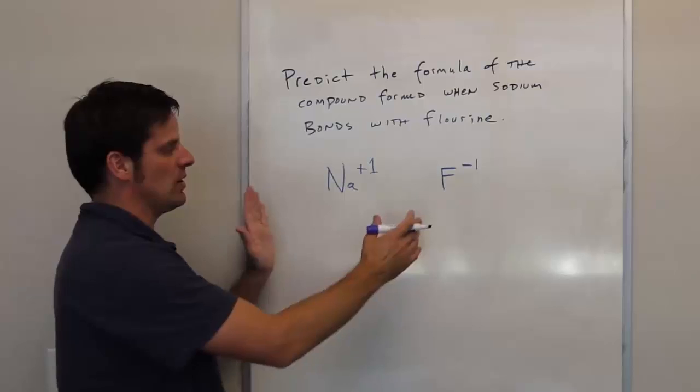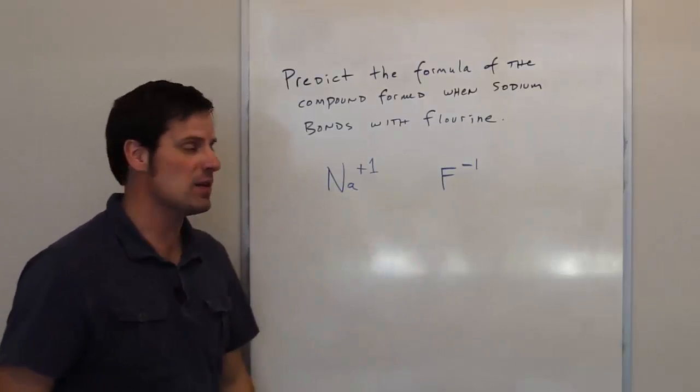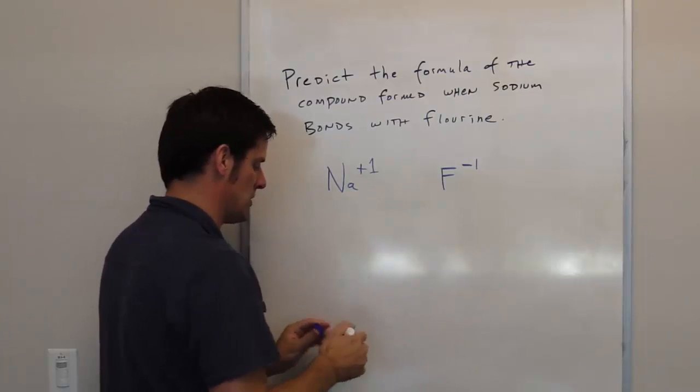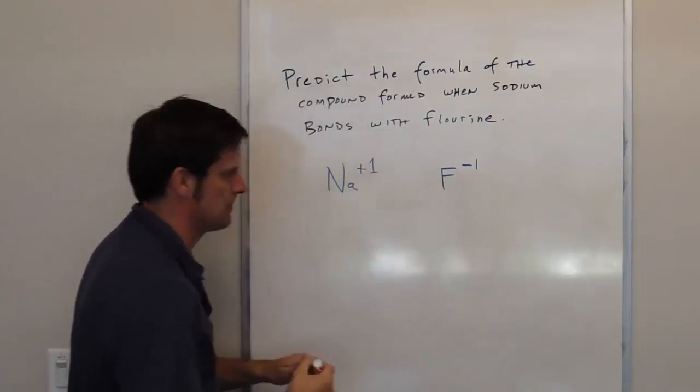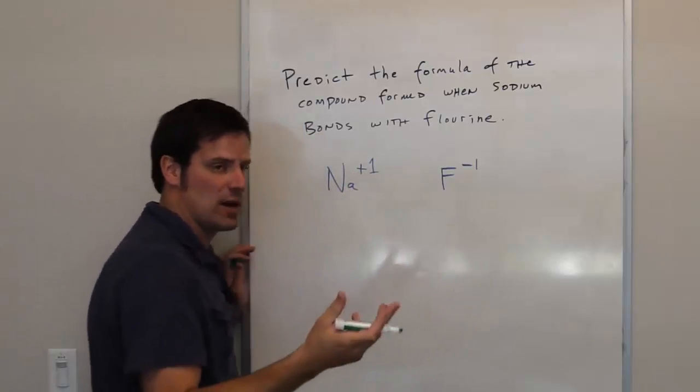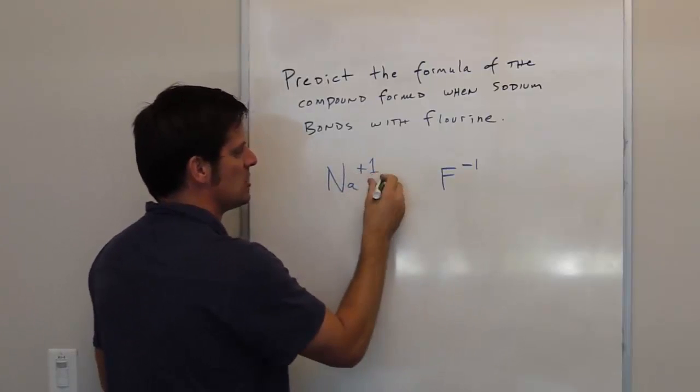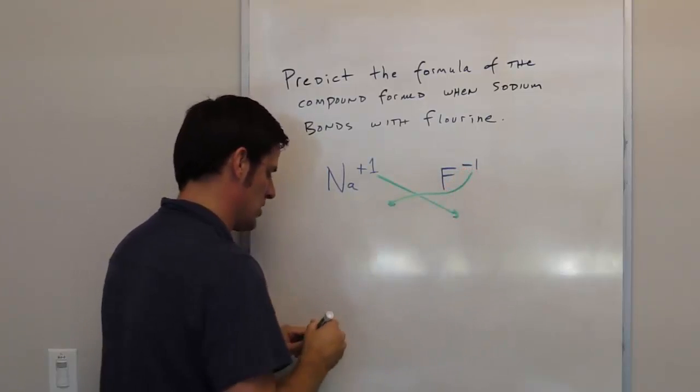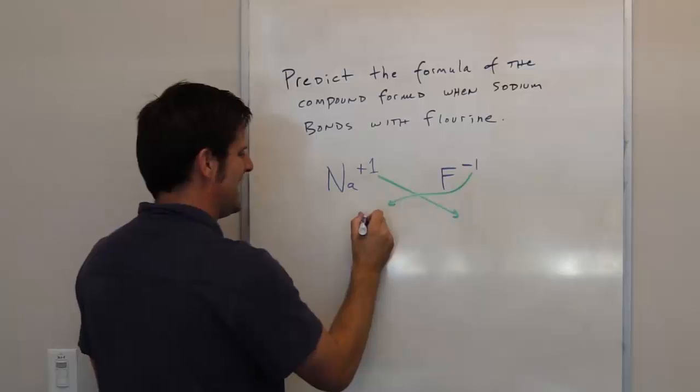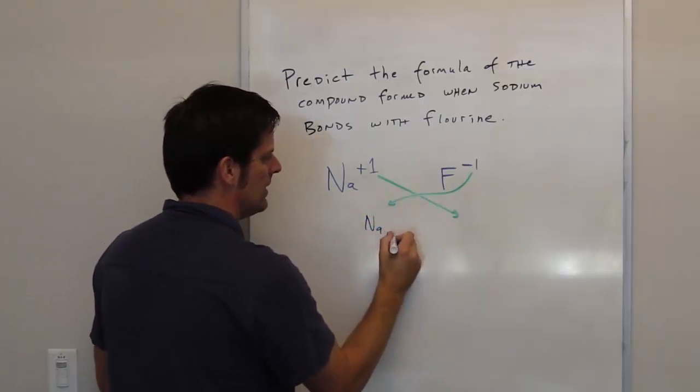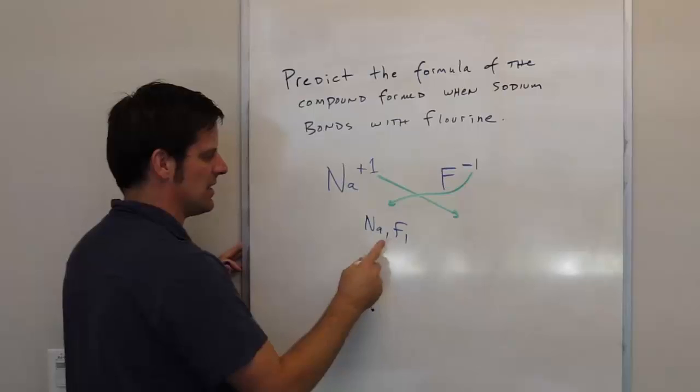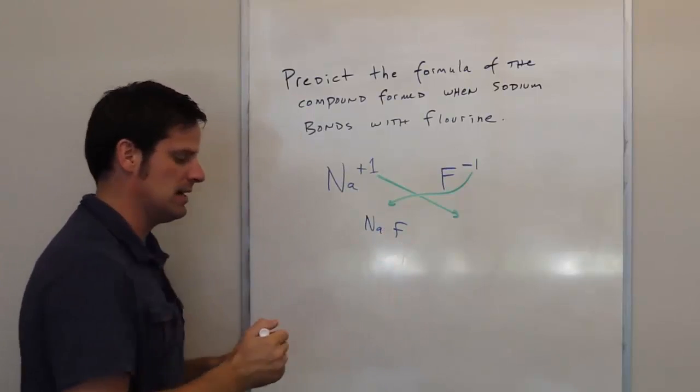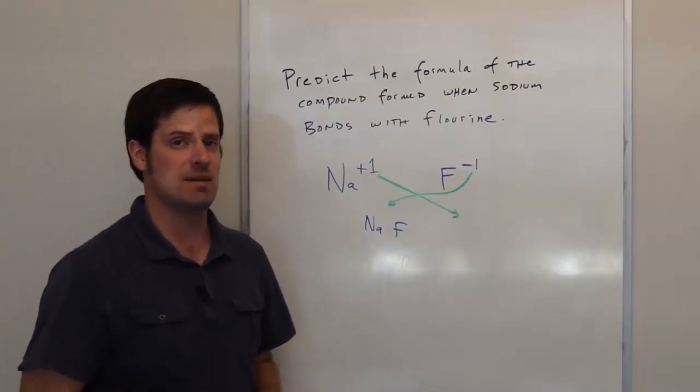So what is the formula that's going to occur when these guys bond together? Well, they have equal charges, so to balance out, you just put them together in a one-to-one ratio, so it's going to be sodium fluoride. However, there is another trick that I just showed you. You take the charge of one, and it becomes the subscript of the other, and vice versa. So we could rewrite this as being Na1F1, or the ones are implied if you take them out of subscript. So that is the formula, NaF of this compound.